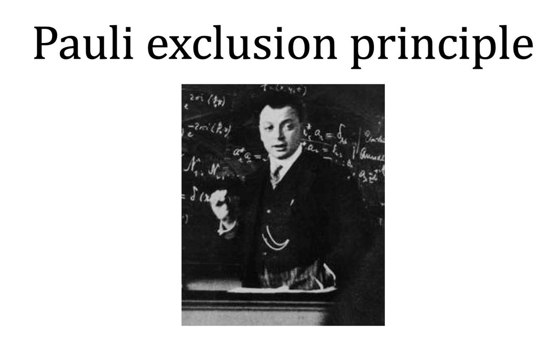The Pauli exclusion principle describes the behavior of all fermions, particles with half-integer spin, while bosons, particles with integer spin, are subject to other principles. Fermions include elementary particles such as quarks, electrons, and neutrinos. Additionally, baryons such as protons and neutrons — subatomic particles composed from three quarks — and some atoms, such as helium-3, are fermions, and are therefore described by the Pauli exclusion principle as well.